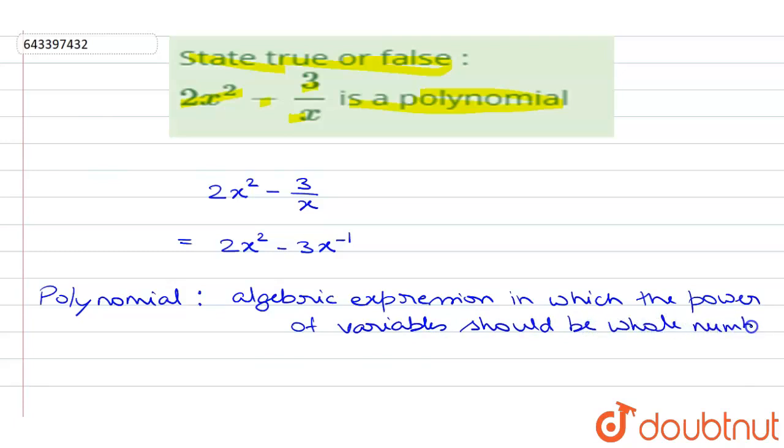So if the power of variables in an algebraic expression is whole number, then that algebraic expression will be known as polynomial.